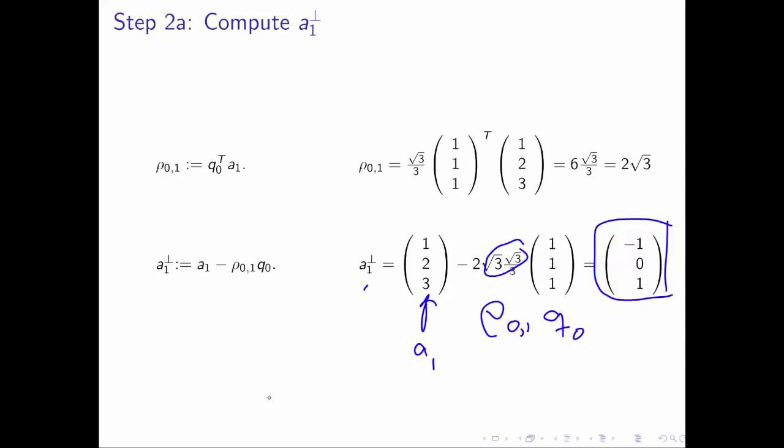And that is the component of A1 perpendicular to the vector q0. So now we have two vectors, q0 and A1 perp, that are orthogonal to each other. The problem is that A1 perp is not of length 1.